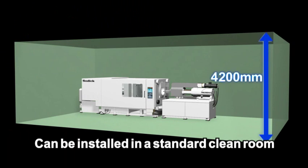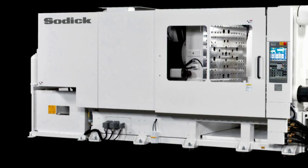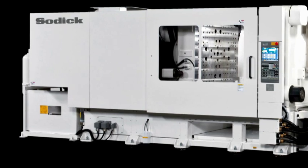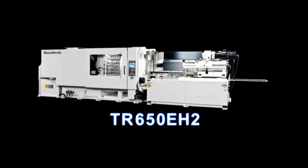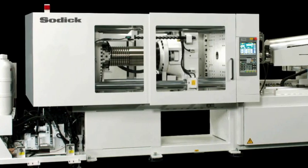The height of the TR650EH2 is 4,200 millimeters and can be installed in a standard clean room. Sodic offers a lineup of compression injection molding machines for large size thin wall light guide plates which can be selected according to the needs of the customer.